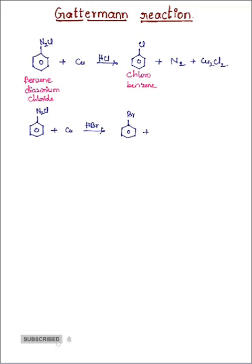So in the Gattermann reaction, we use copper powder. We are adding that copper powder to benzene diazonium chloride and we will get the aryl halides like chlorobenzene if it is in the presence of HCl and bromobenzene if it is in the presence of HBr.